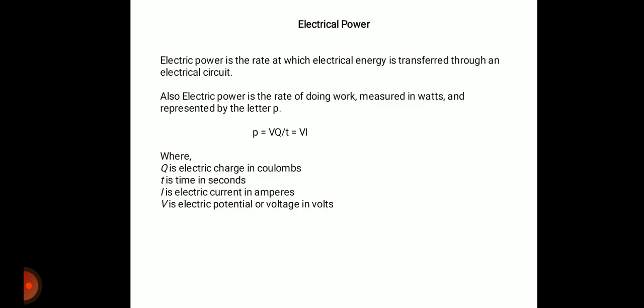What is electrical power? Electrical power is the rate at which electrical energy is transferred through an electrical circuit. The rate of transferring electrical energy is called electrical power, or simply, electrical power is the rate of doing work. It is measured in watt, represented by letter P. P is equal to voltage multiplied by current — we can measure electrical power by multiplying voltage into current.